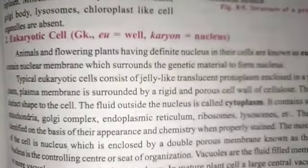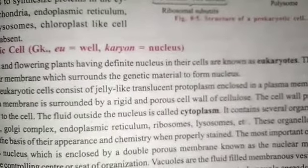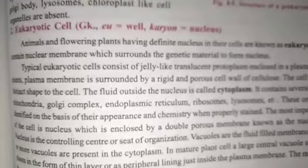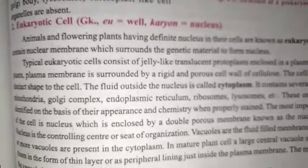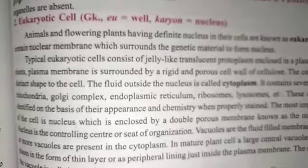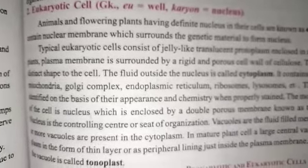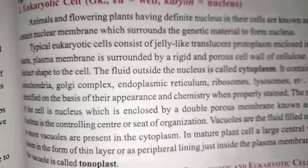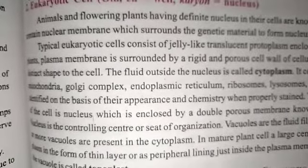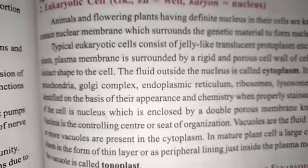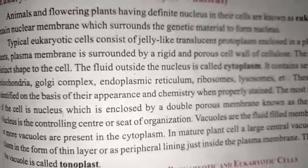Eukaryotic cells: animals and plants having a definite nucleus in their cells are known as eukaryotes. After studying prokaryotes, the cells in which all cell organelles gradually developed are called eukaryotic cells — evolved from prokaryotes through organic evolution. Eukaryotic cells contain many micro cell organelles like mitochondria, endoplasmic reticulum, Golgi body, lysosome, and chloroplast — all these cell organelles are present.